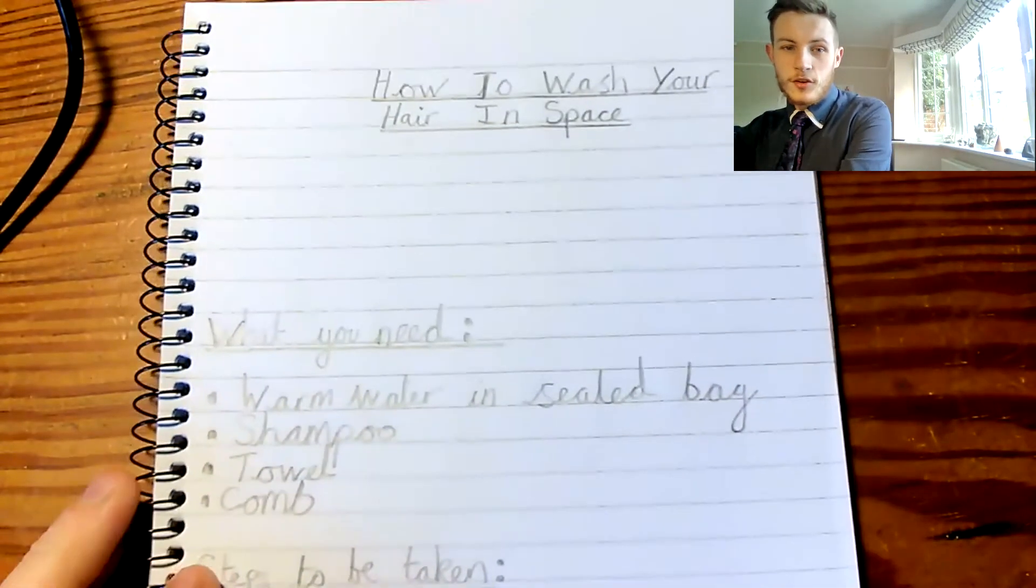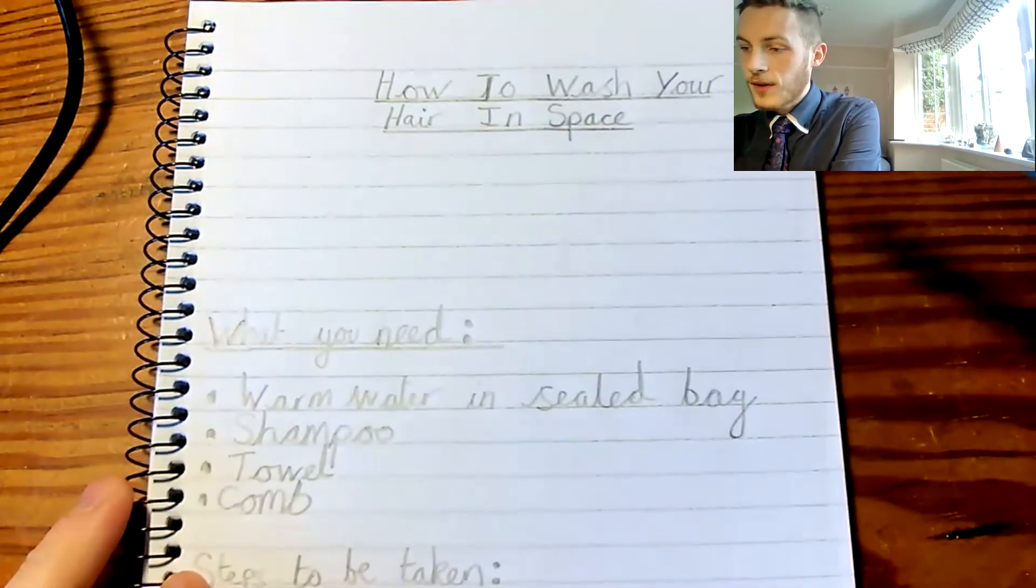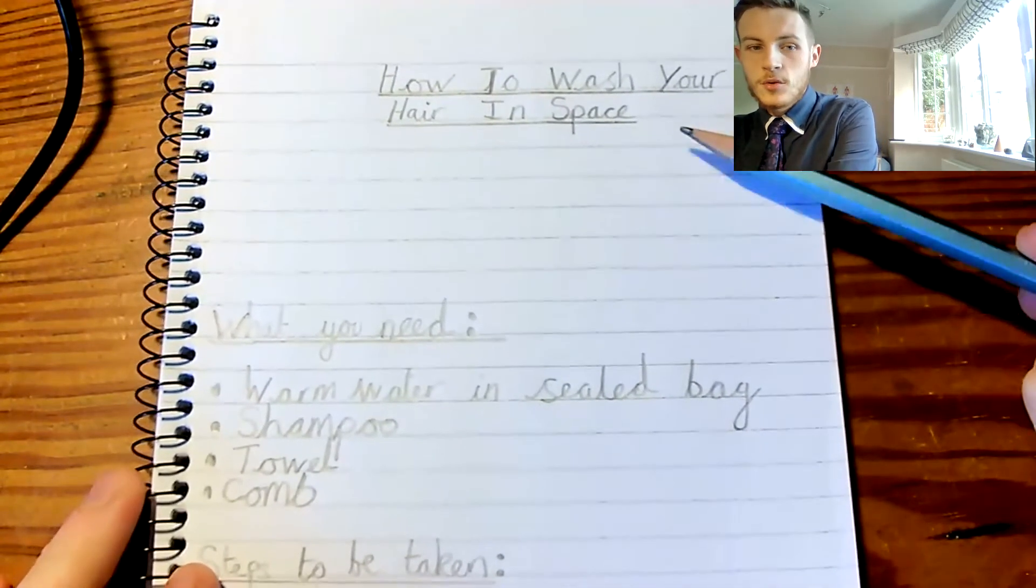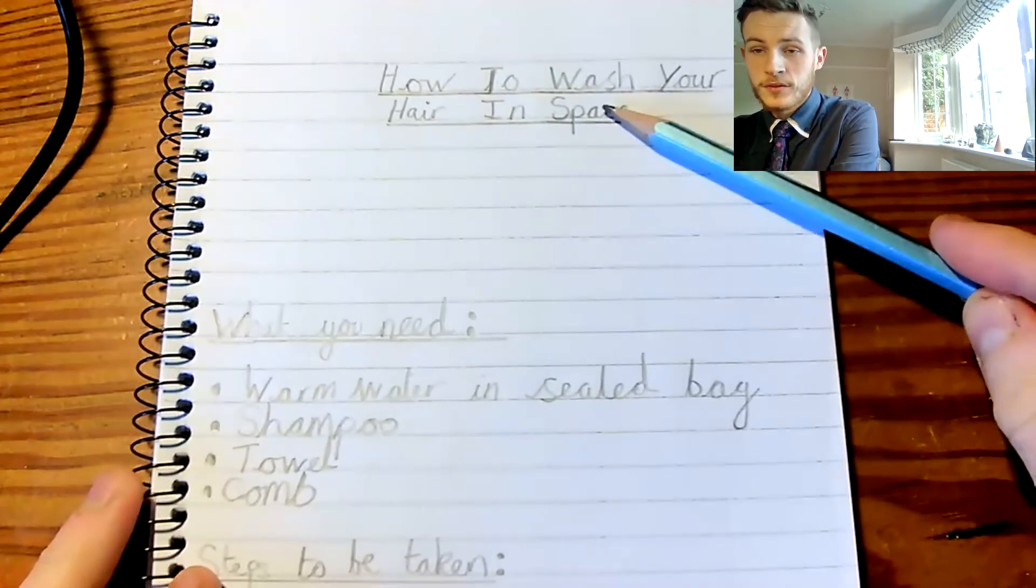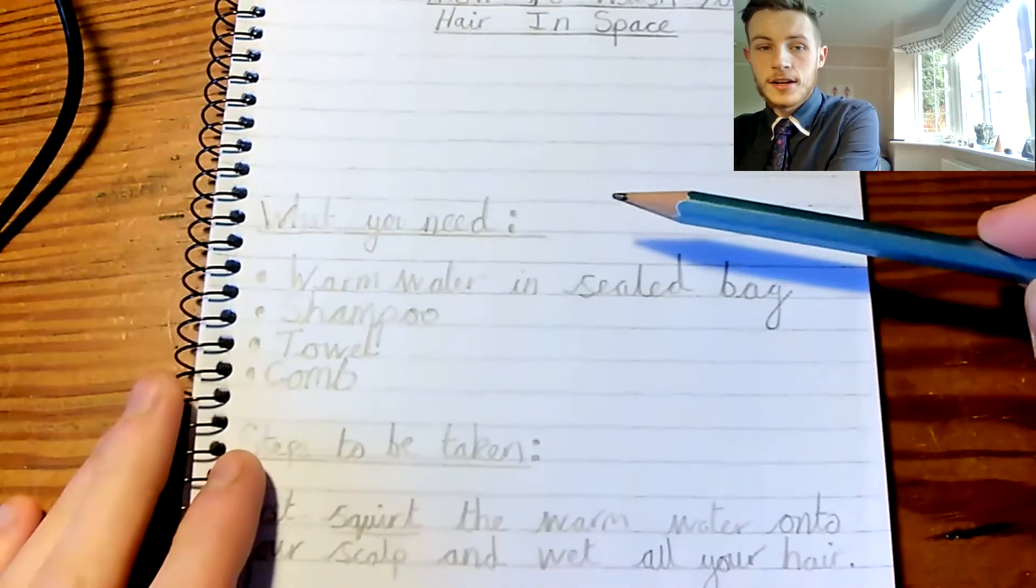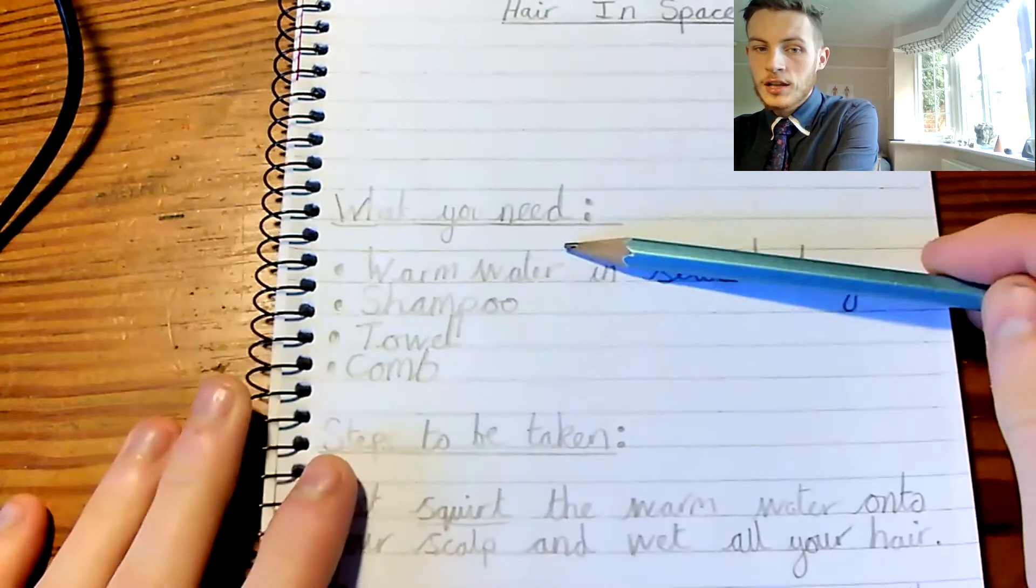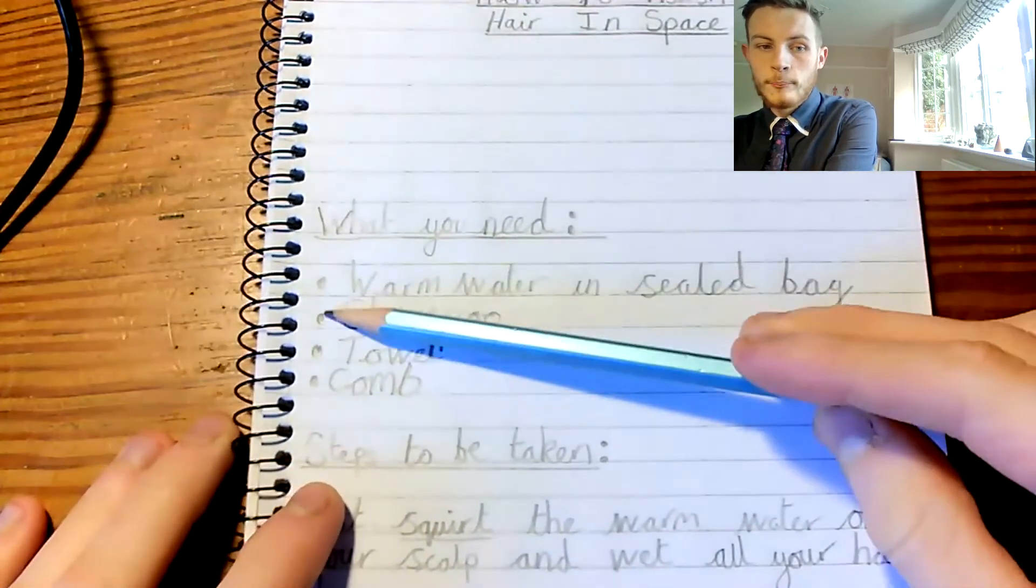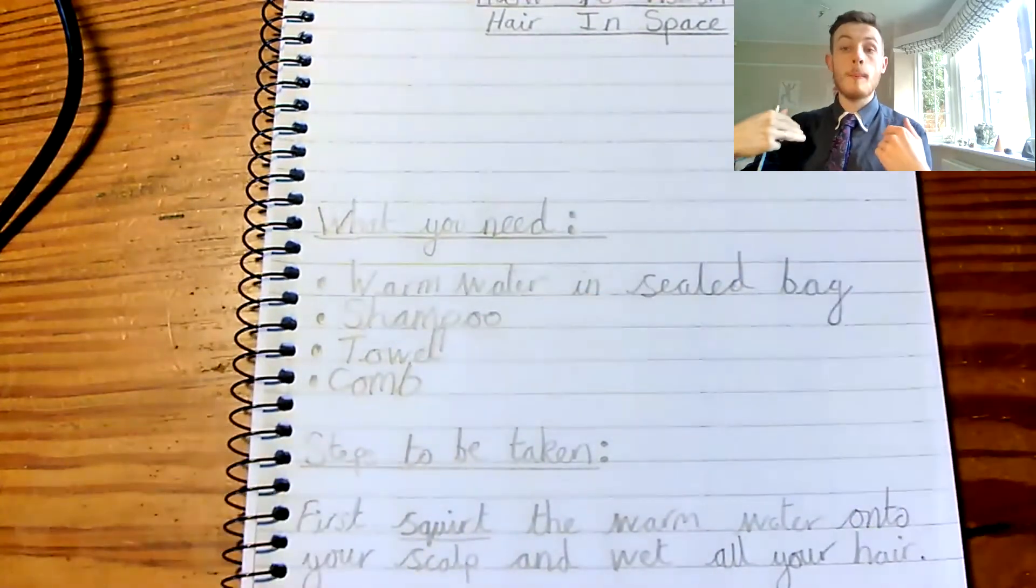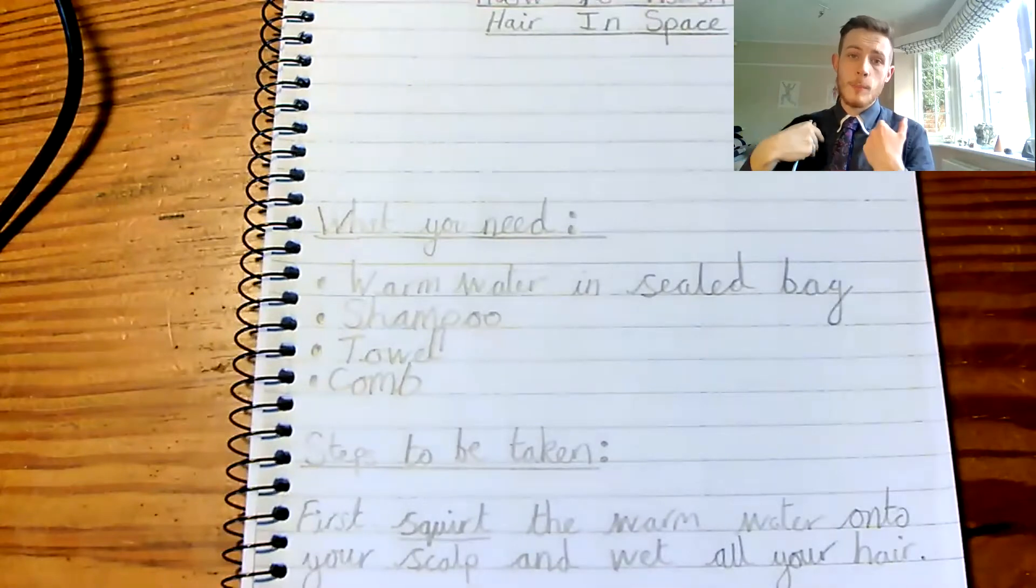So far, we've got the title, how to wash your hair in space. We've got our introductory paragraph that we've left a space there. We've then got what you need. We've got our list of things you need, all with a bullet point. Bullet point. And it's just a full stop, but it's in the middle.